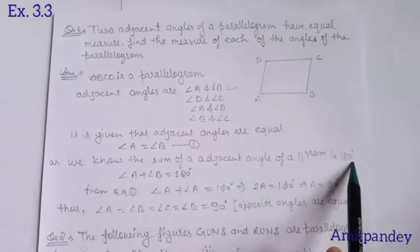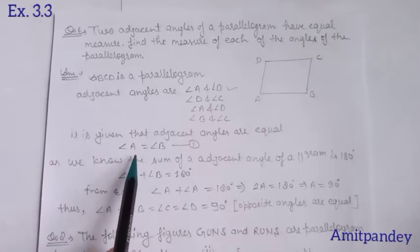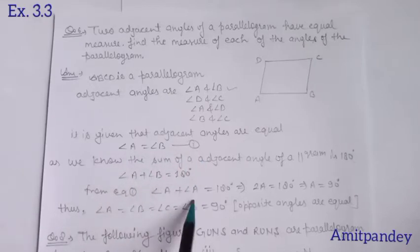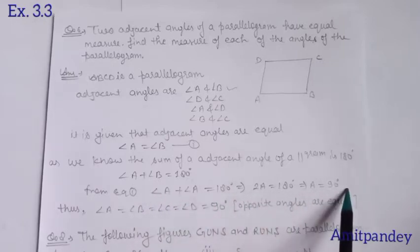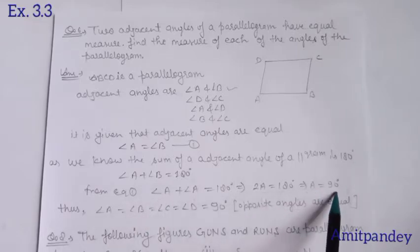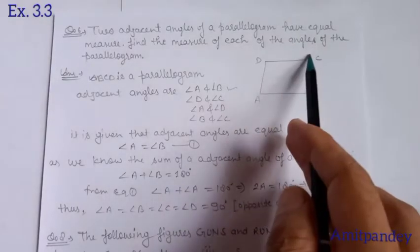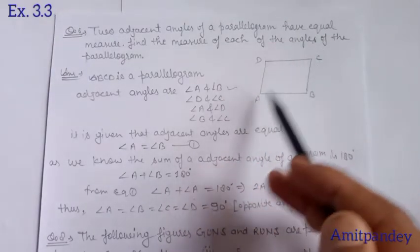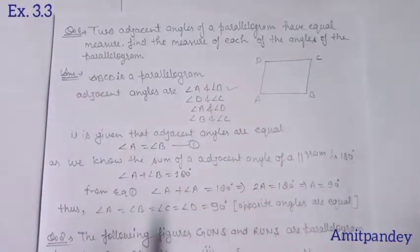As we know, the sum of adjacent angles is 180°, so angle A plus B equals 180°. And we know angle B is also equal to angle A. From this we can replace angle B with angle A, giving angle A plus angle A equals 180°, so 2A equals 180°, and A equals 90°. So if angle A equals 90° and angle B is 90°, then angle C is also 90° because opposite angles are equal. Similarly, B is 90° means D is also 90°. So A, B, C, D are all 90°.